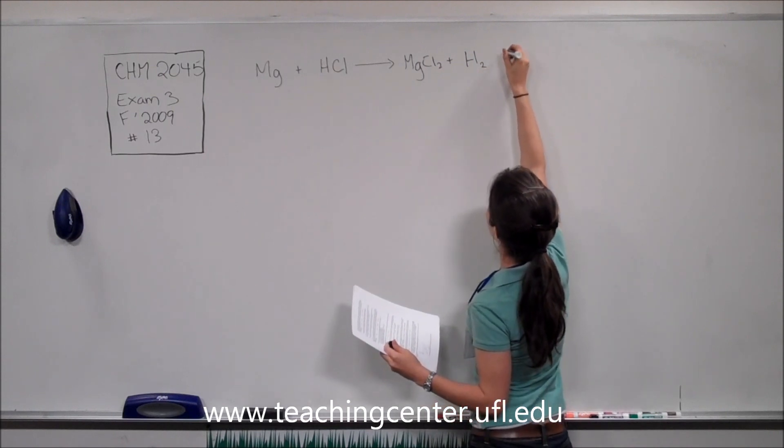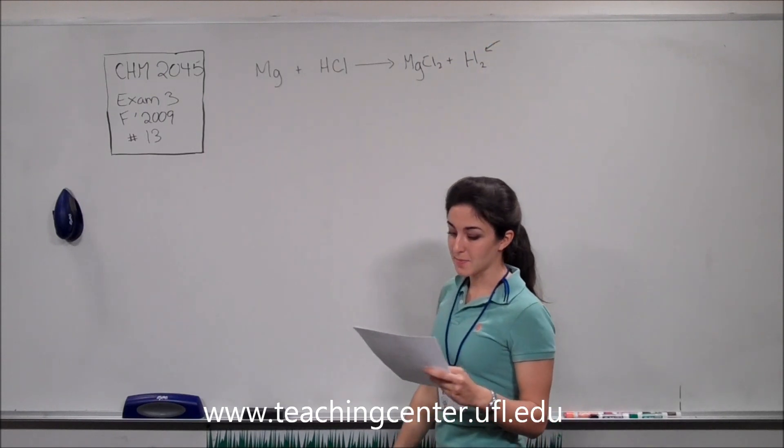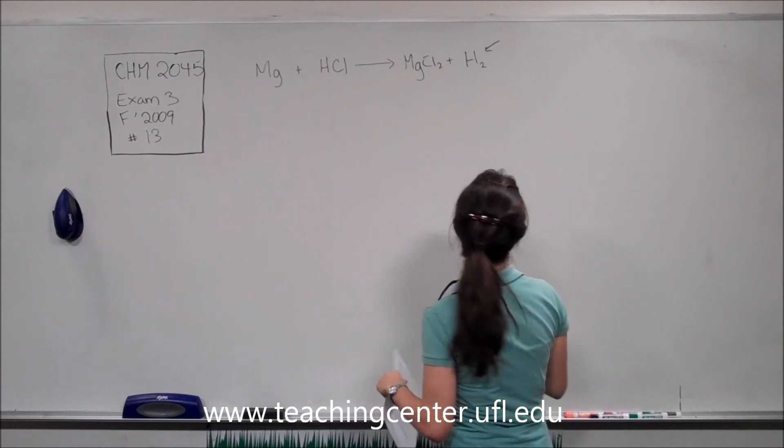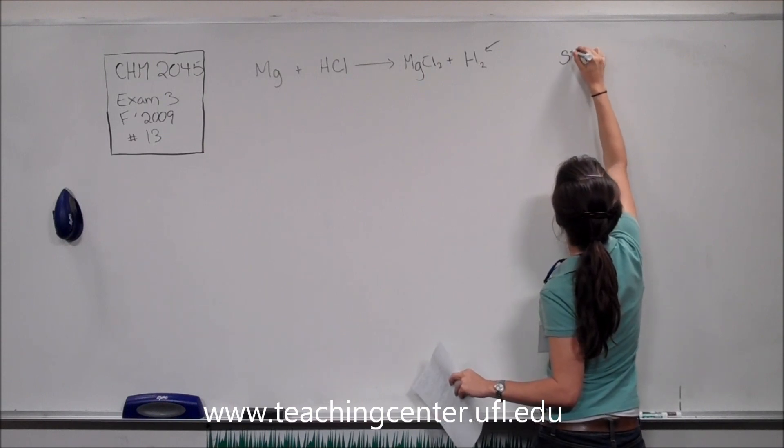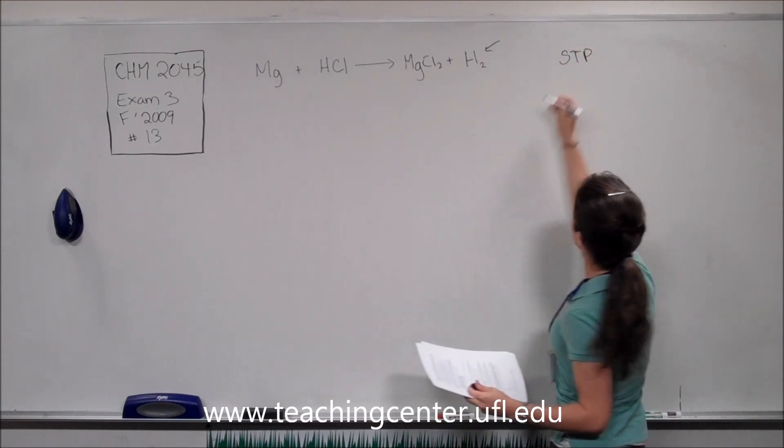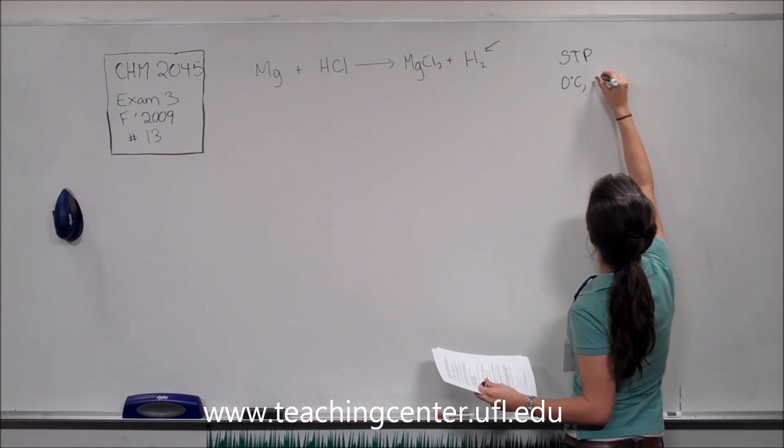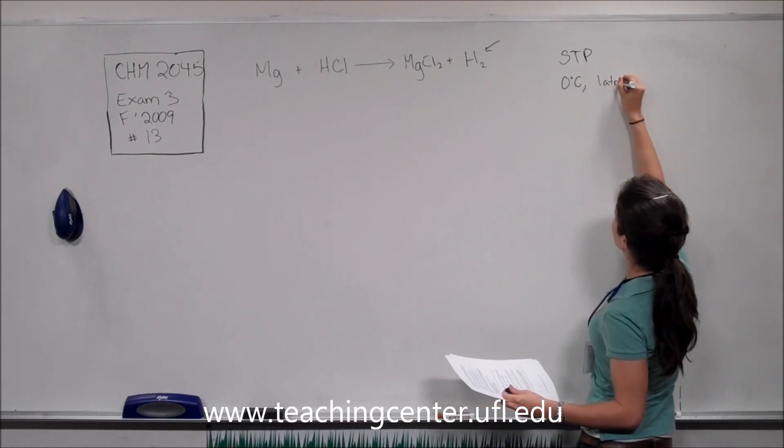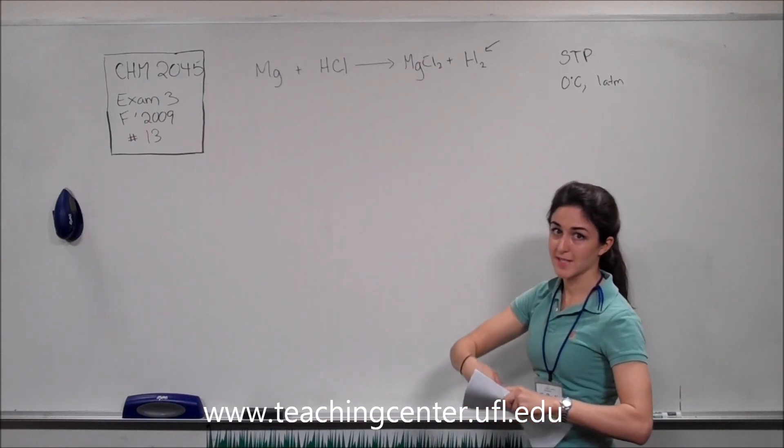So the problem asks us to find the volume of hydrogen gas produced at standard temperature and pressure. Now you should know that standard temperature and pressure is zero degrees Celsius and one atmosphere. This is just something that you'll need to know as a chemist.